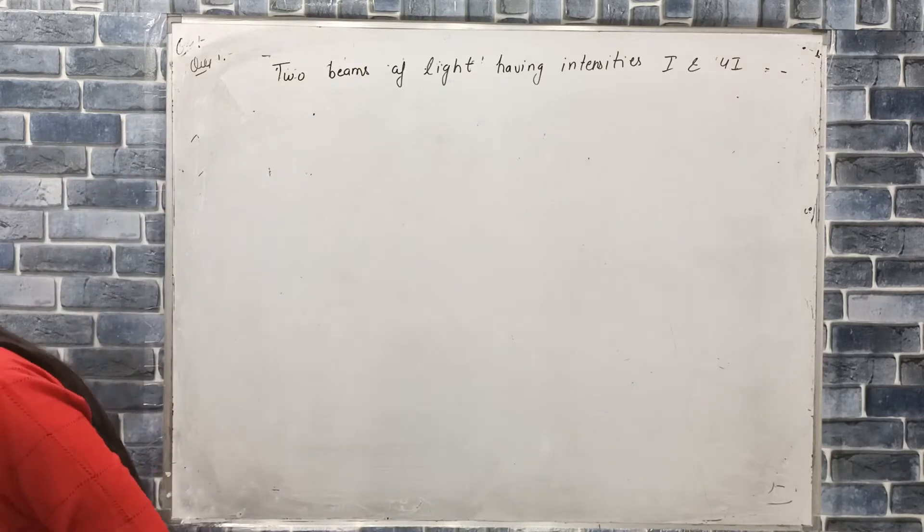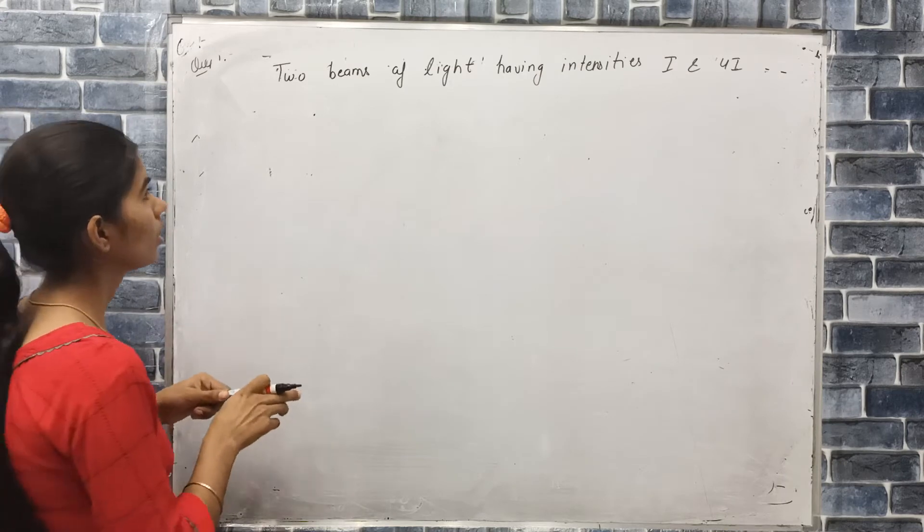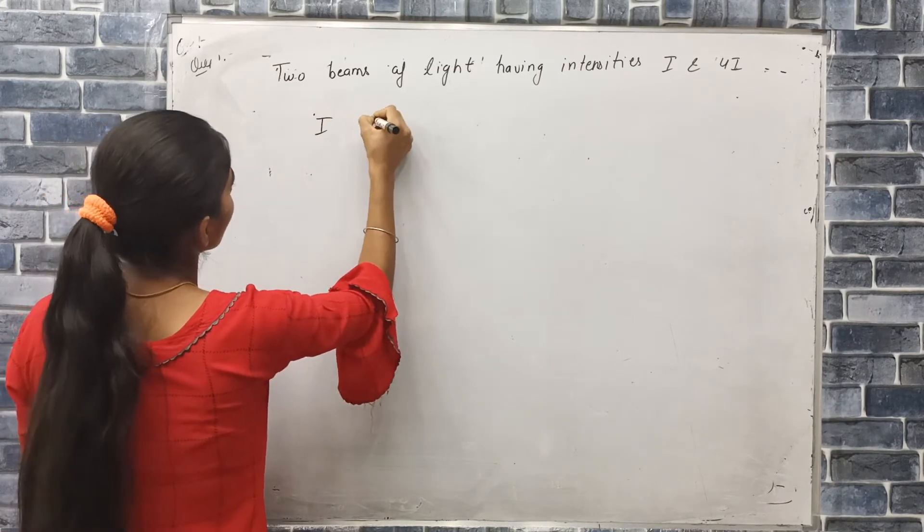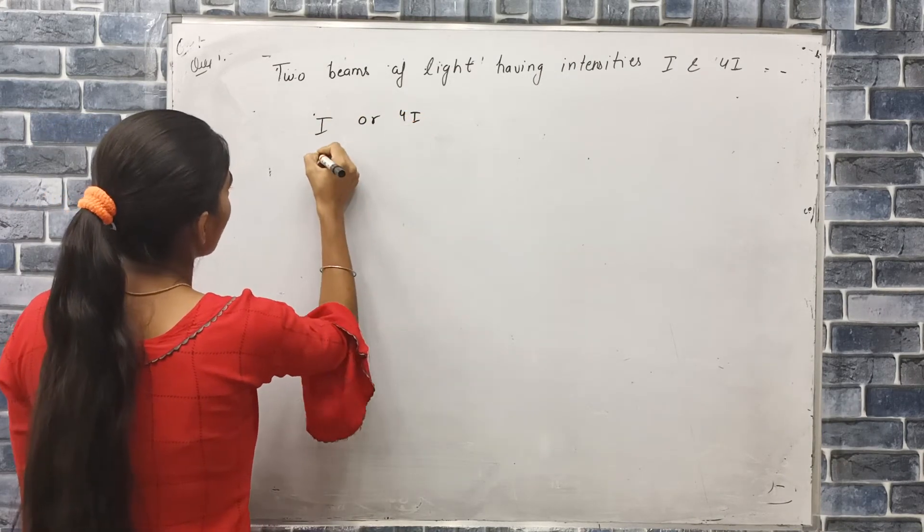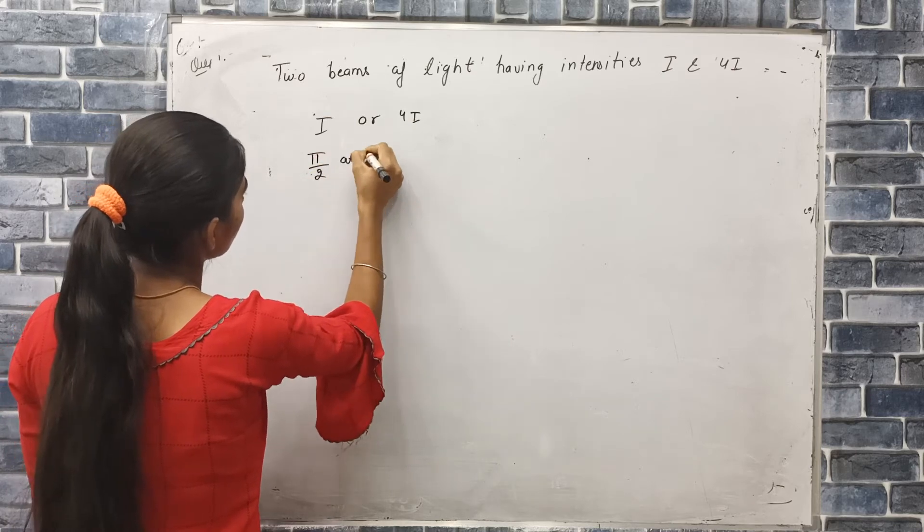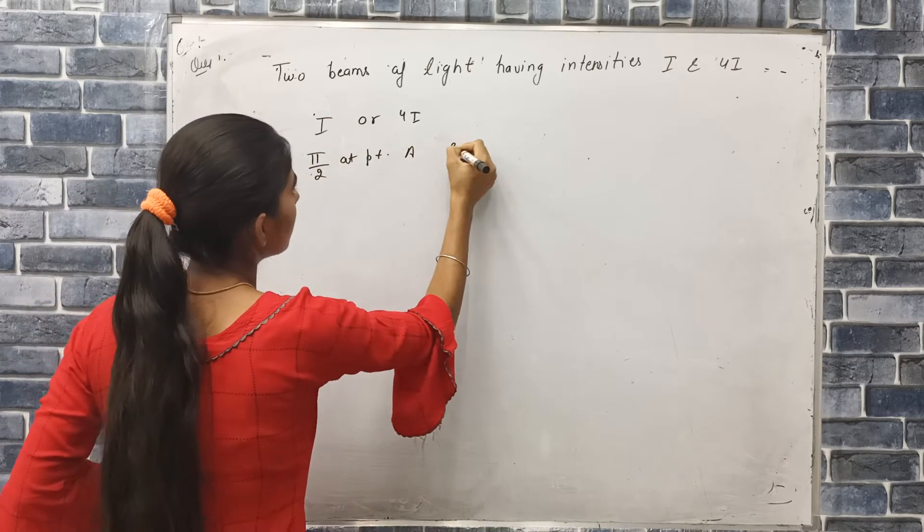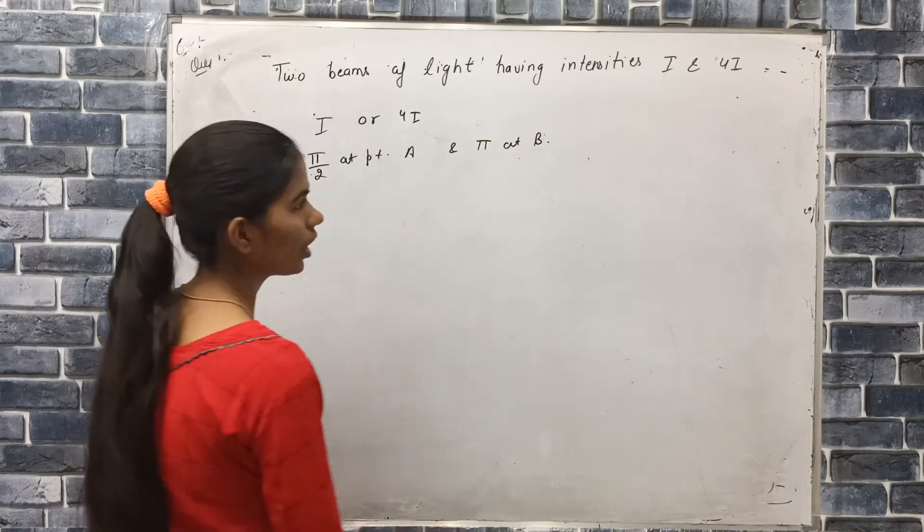We have to tell the difference between the resultant intensity. So I and 4I are given, π by 2 is given at point A and π is given at point B.